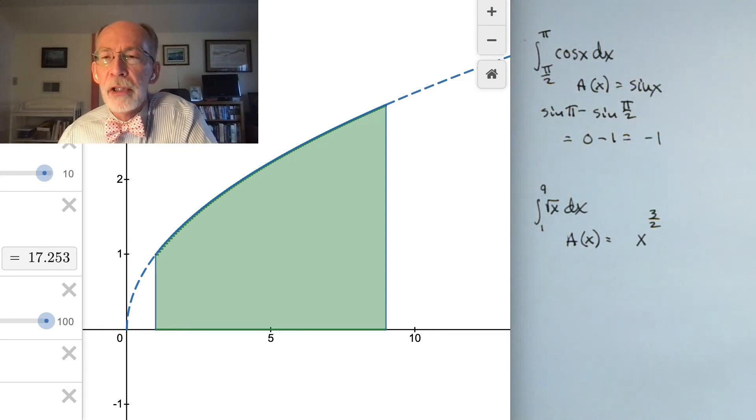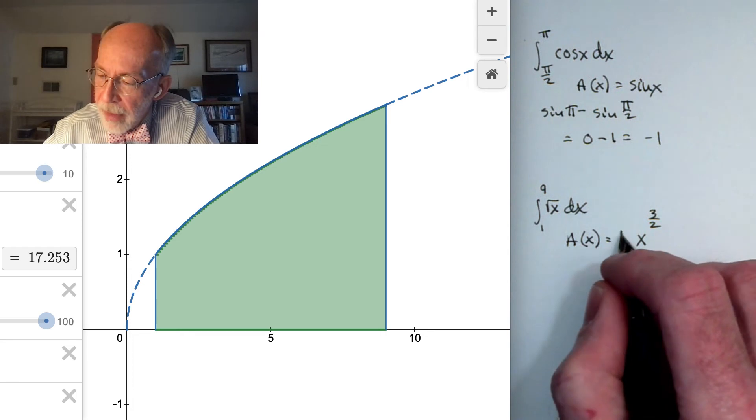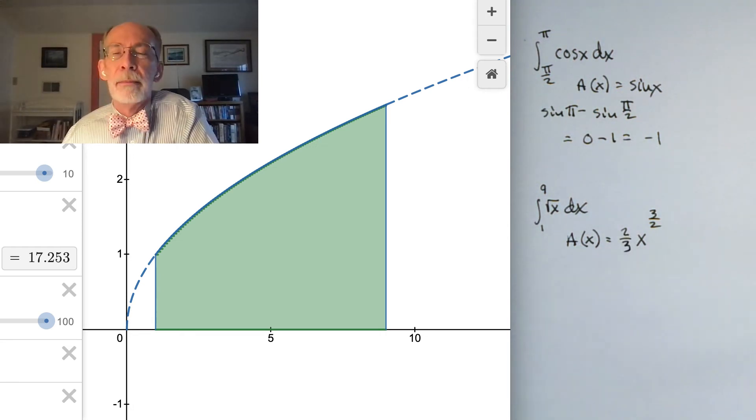Now if I differentiate this, I don't get x to the 1/2. I get 3/2 x to the 1/2. But if I stick 2/3 out in front, now by the time I've differentiated this, I get the square root function.